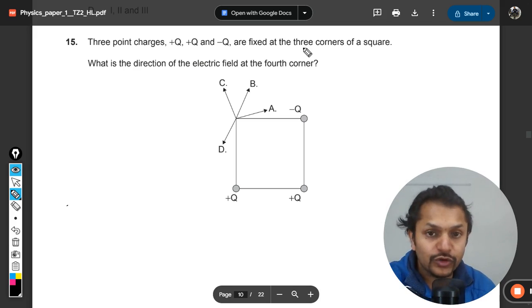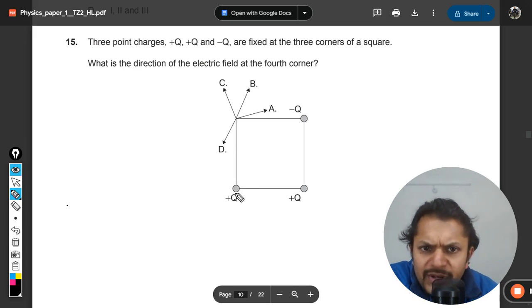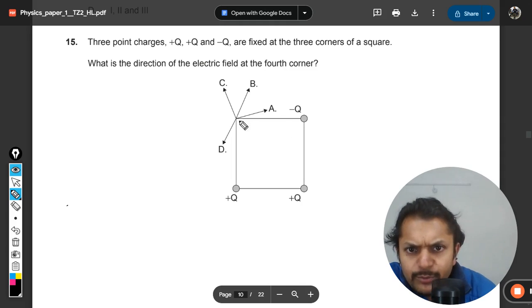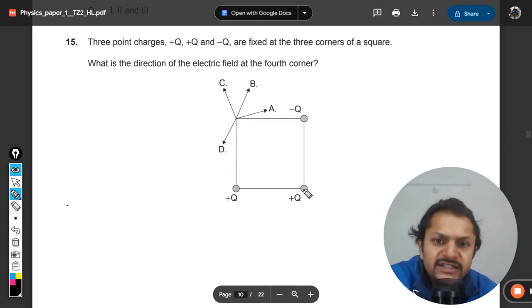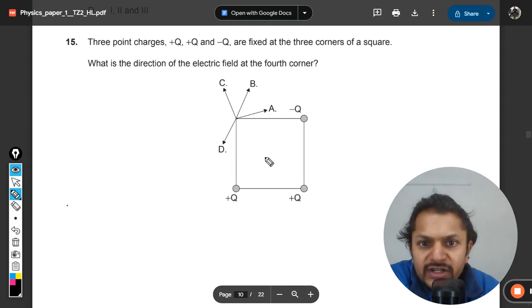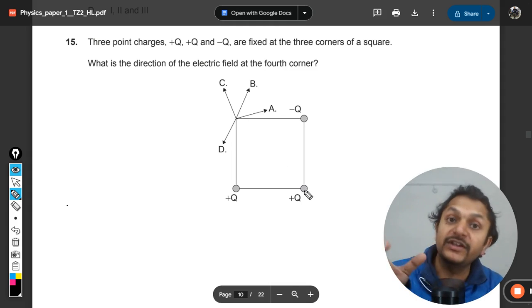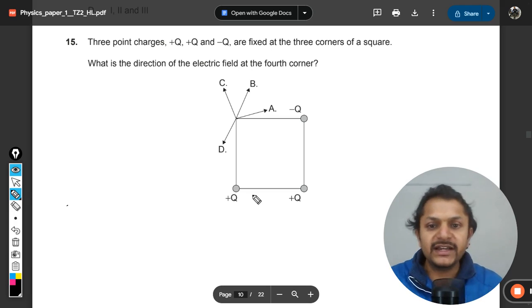What is the direction of the electric field at the fourth corner? Let us see. So this is +Q, this is -Q, and both of them are equidistant from this point. This charge is +Q but distance is bigger, so the electric field strength will be lesser.